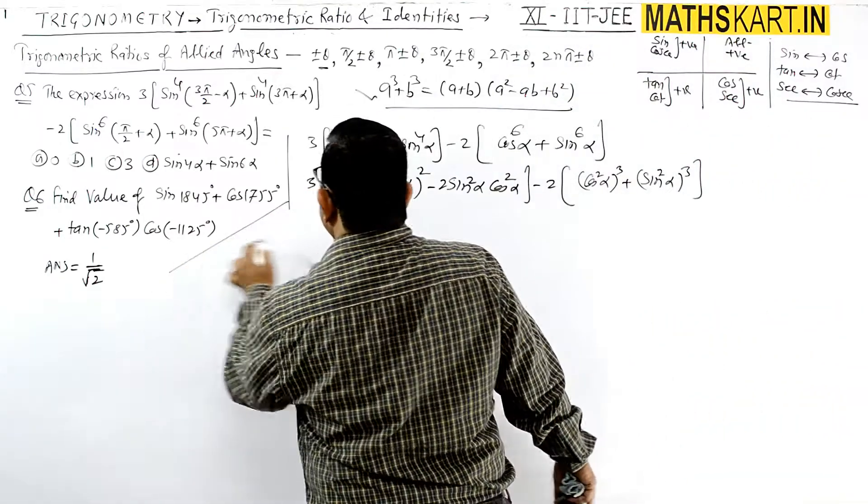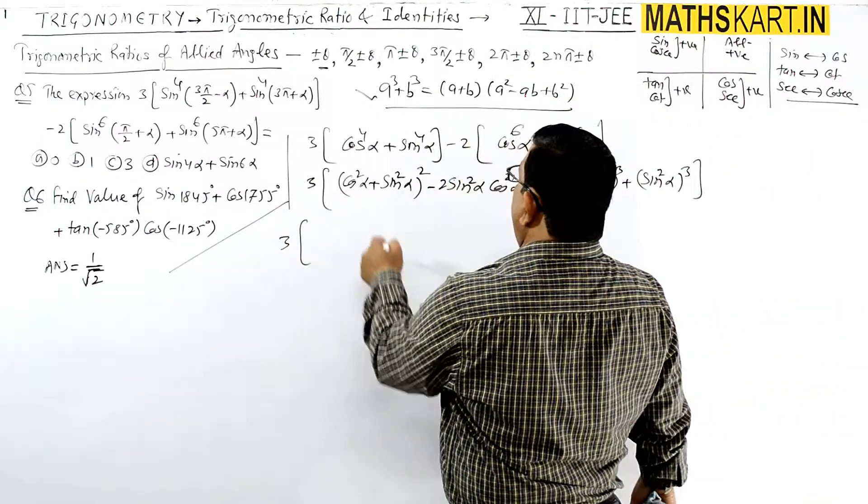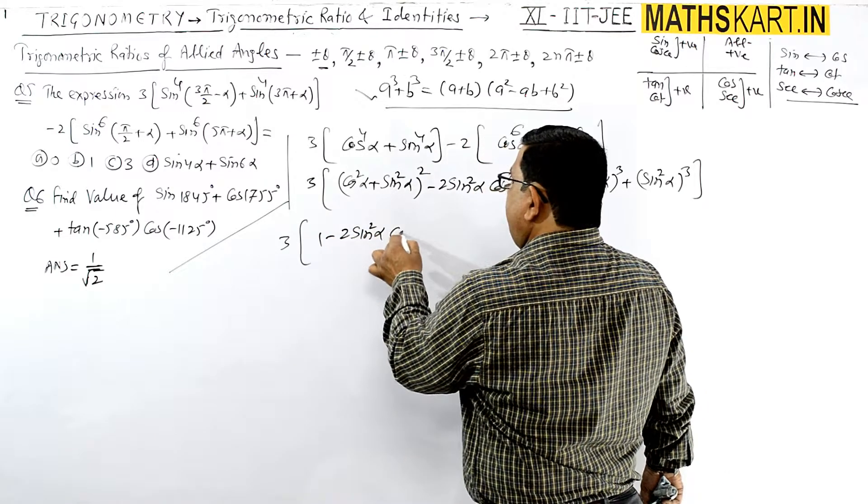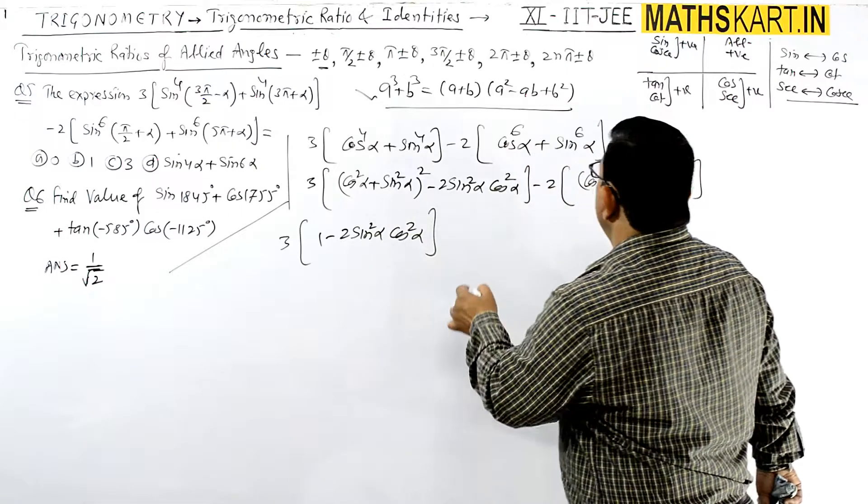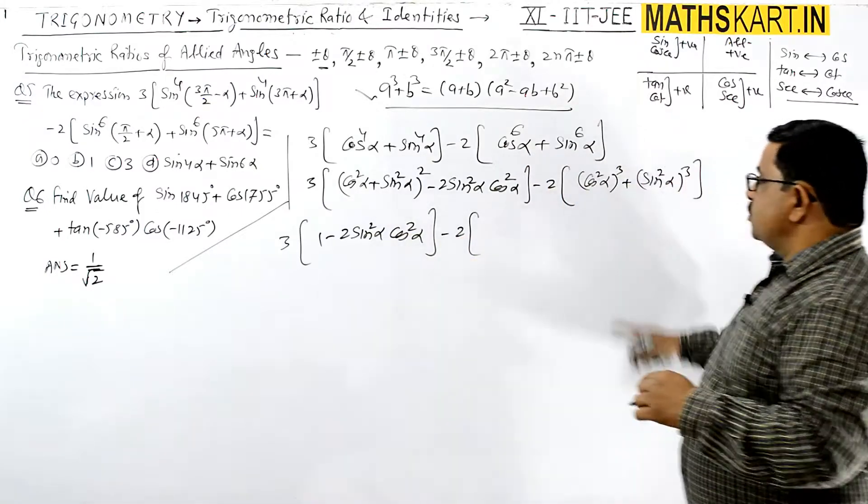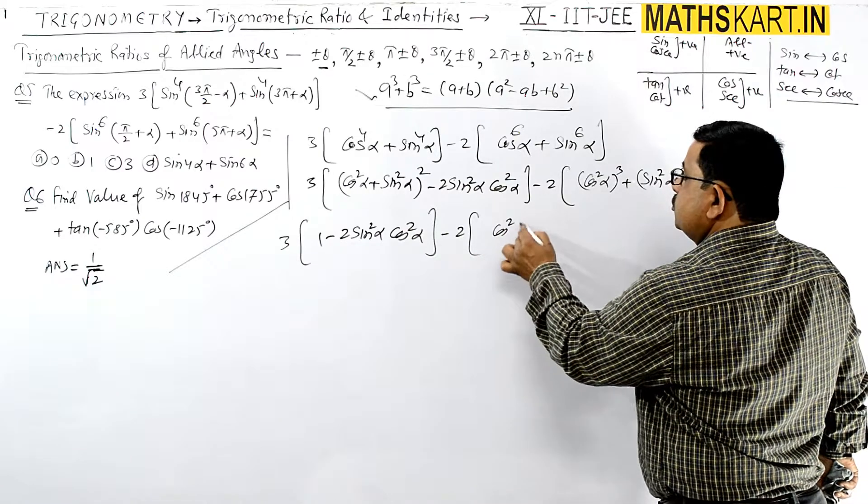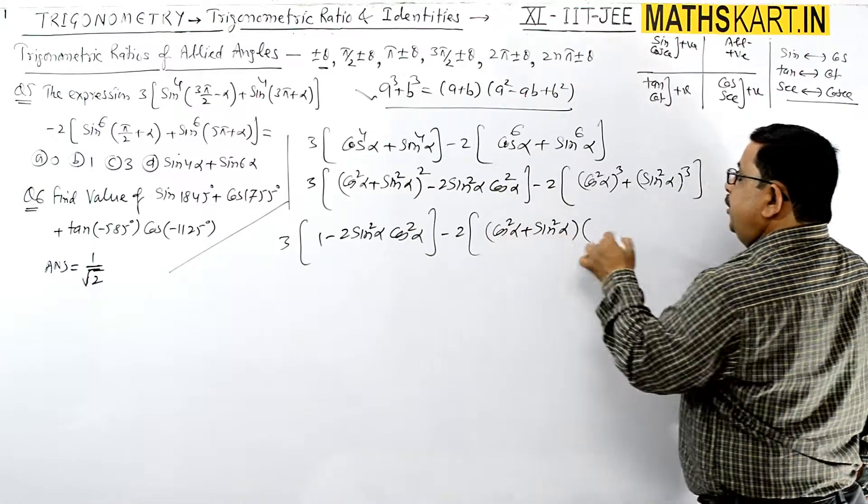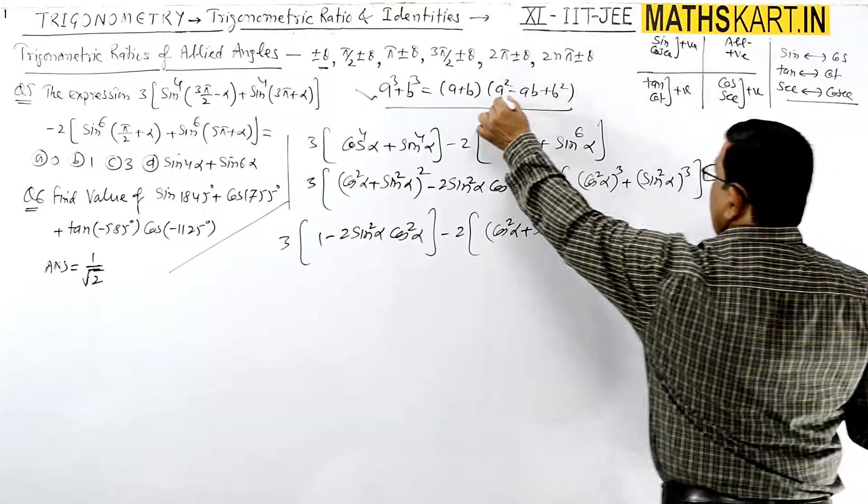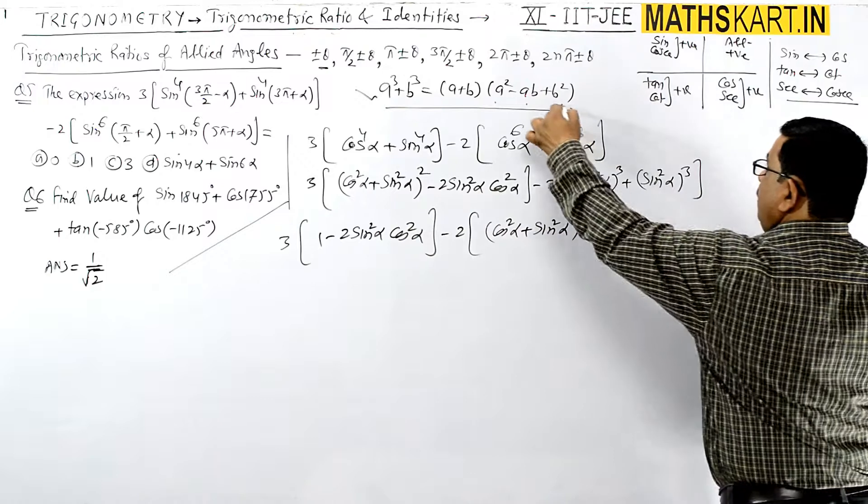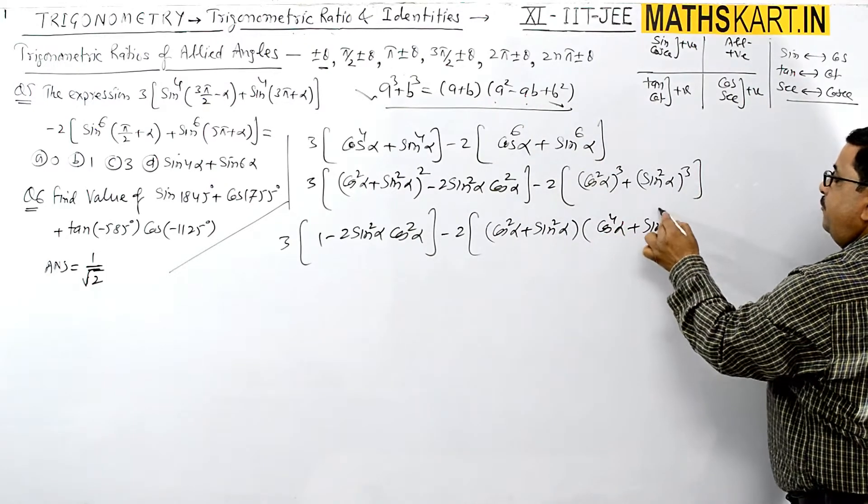By this formula, that can be written as (cos^2 α)^3 + (sin^2 α)^3. Then again put the values. So the value becomes 1, so 1 minus 2 times sin^2 α cos^2 α minus 2 times of a^3 + b^3. So a + b into a^2 minus ab plus b^2, a^2 means cos^4 α plus b^2 means sin^4 α.